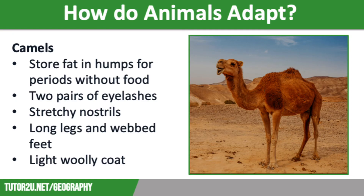Camels have very concentrated urine and faeces to reduce water loss. They also have two pairs of eyelashes to protect their eyes from the bright sun, as well as stretchy nostrils that they can close in a sandstorm. Additionally, they have very long legs to keep their bodies away from the hot sand and to enable them to travel long distances. They also have webbed feet to stop them sinking in the sand, and a light woolly coat to reflect the sun, keeping them cool during the day and warm at night.